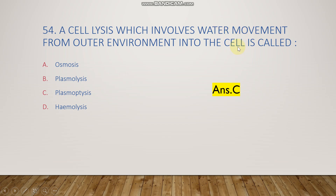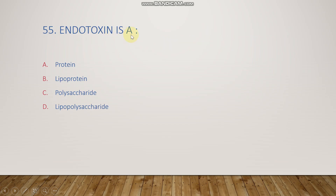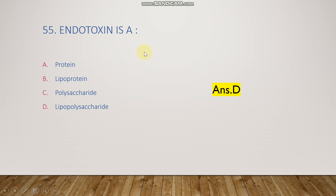The next question: endotoxin is a protein, lipoprotein, polysaccharide, or lipopolysaccharide? The right answer is option D, lipopolysaccharide. These lipopolysaccharides are present on the outer membrane of gram-negative bacteria.